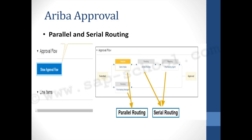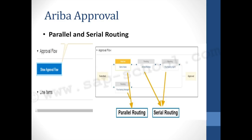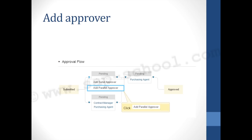When you click 'Show Approval Flow' for any document, you see a list of parallel and serial routing. In serial routing, a user can only approve after the previous approver — such as Archie Rooney — has approved. In parallel routing, the purchasing manager's approval is independent of others. When two levels of approval are independent of each other, parallel processing is used. This is highly beneficial for saving time and meeting deadlines without holding up one approver's work for another.